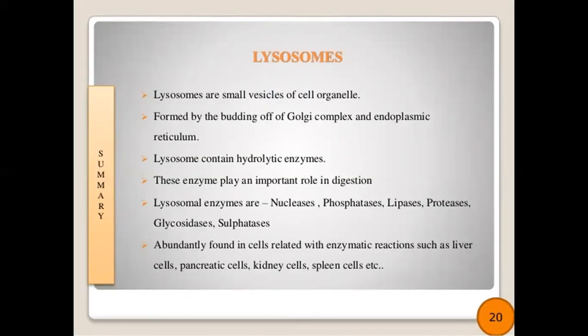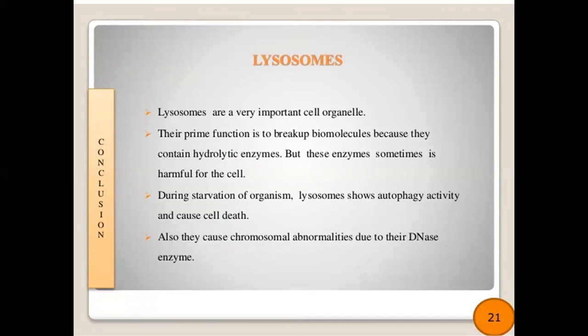In summary, lysosomes are small vesicles or cell organelles formed by the budding of the Golgi complex and endoplasmic reticulum, containing hydrolytic enzymes that play an important role in digestion. Lysosomal enzymes include nucleases, phosphatases, lipases, proteases, glycosidases and sulfatases, and are abundantly found in cells with high enzymatic activity such as liver, pancreatic, kidney and skin cells. Their prime function is to break up biomolecules, but these enzymes can sometimes be harmful; during starvation, lysosomes show autophagy activity and cause cell death, and can cause chromosomal abnormalities via deoxyribonuclease enzyme.